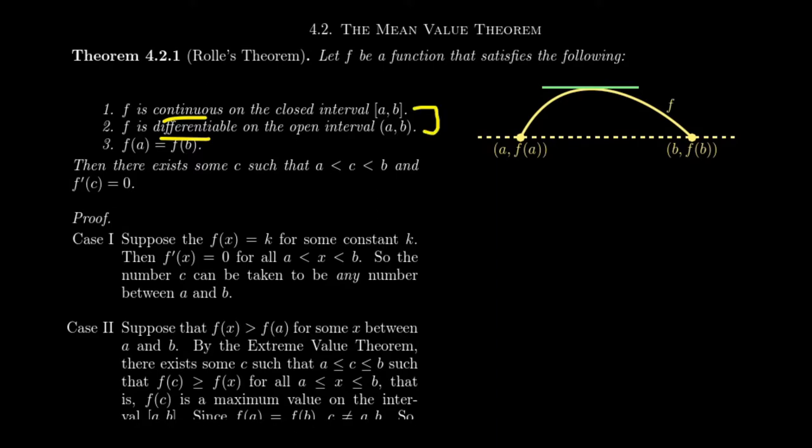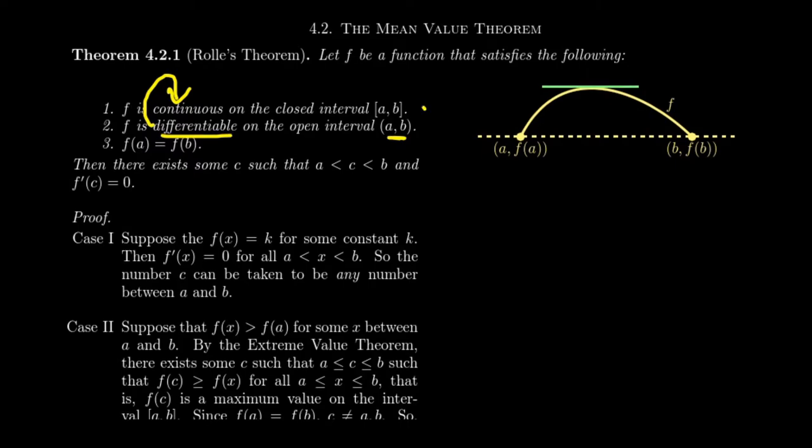Differentiable means that the derivative exists everywhere, that the tangent line exists everywhere in these domains. And you will notice a slight difference in the intervals. We expect that f is continuous on the closed interval [a,b], but it's differentiable on the open interval (a,b), which is a slightly weaker statement. Now, one has to be careful, right? Because differentiability actually implies continuity. Differentiable is a stronger condition.